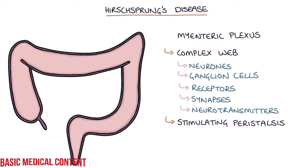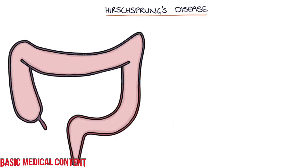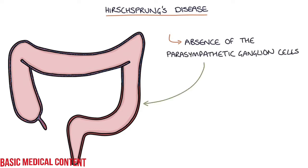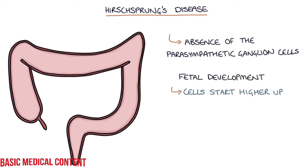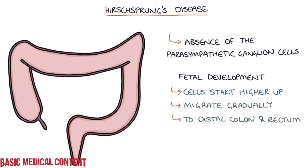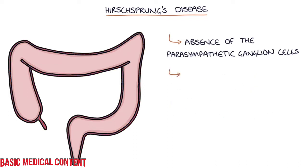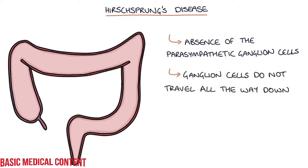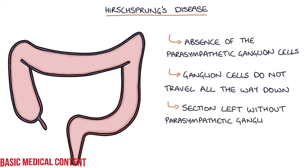Without this stimulation, the bowel loses its motility and stops being able to pass food along its length. The key pathophysiology in Hirschsprung's disease is the absence of the parasympathetic ganglion cells. During fetal development, these cells start higher up in the gastrointestinal tract and migrate gradually down to the distal colon and rectum. Hirschsprung's disease occurs when the parasympathetic ganglion cells do not travel all the way down the colon, leaving a section at the end without these cells.